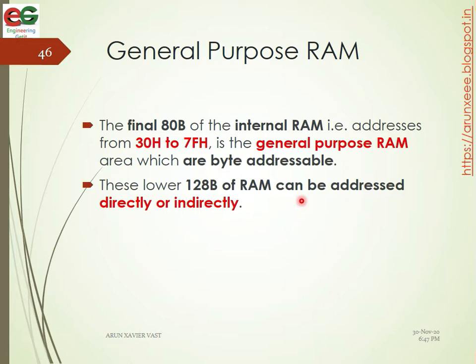The final 80 bytes of internal RAM — that is the address from 30H to 7FH — is a general purpose RAM area which is byte addressable. These 128 bytes of RAM can be addressed directly or indirectly.